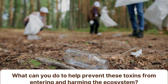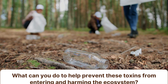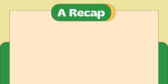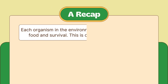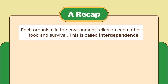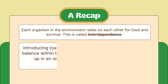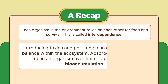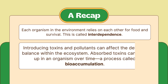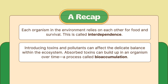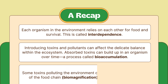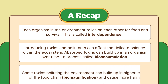What can you do to help prevent these toxins from entering and harming the ecosystem? Let's recap. Each organism in the environment relies on each other for food and survival — this is called interdependence. Introducing toxins and pollutants can affect the delicate balance within the ecosystem. Absorbed toxins can build up in an organism over time, a process called bioaccumulation. Some toxins polluting the environment can build up in higher levels of the food chain — biomagnification — and cause more harm.